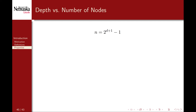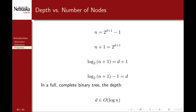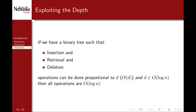Solving for d: take 1 to the other side, take the logarithm base 2, and take the other 1 to the other side. Thus in a full and complete binary tree, the depth is order logarithmic with respect to the number of nodes. This is the property we're going to exploit. If we have a binary tree where insertion, retrieval, and deletion can all be done proportional to the depth, and the binary tree is nearly full or complete, then all operations can be done in logarithmic time — like having the benefits of binary search for every operation without requiring random access.